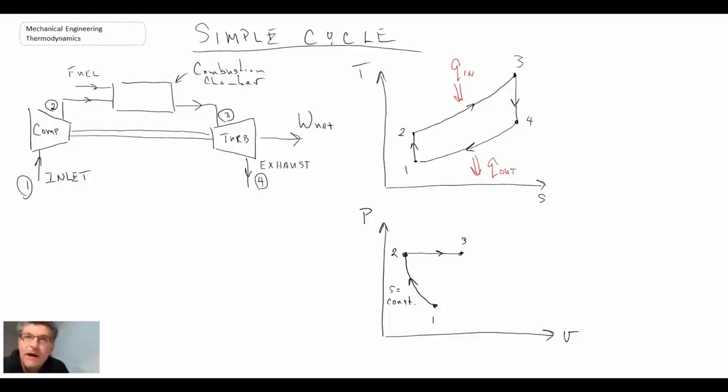We then go into what we will consider to be a constant pressure heat addition process, taking us to three. In reality we do have a little bit of a pressure drop in our combustion chamber. However, for a simple analysis we will assume that to be zero pressure drop. And then we go through isentropic expansion taking us out to state four. And then finally the heat rejection or the exhaust cycle bringing us back. And three to four as well has constant entropy.